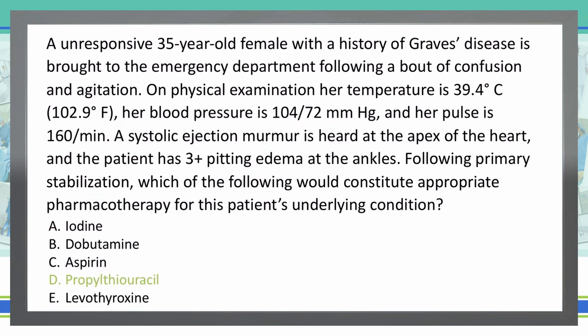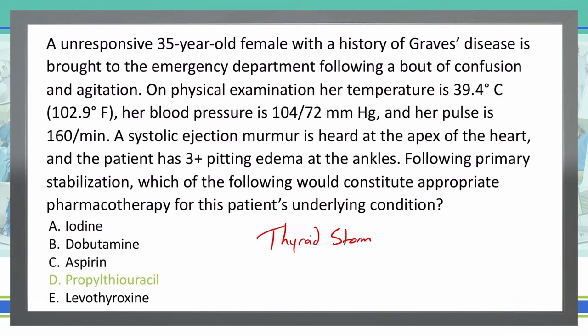D is the correct answer. What we're dealing with is a thyroid storm, which is an extreme form of thyrotoxicosis. The symptoms we see — high pulse rate, the murmur, pitting edema, high temperature — are all due to beta adrenergic outflow from that thyroid storm. We do our primary stabilization for the unresponsive patient, ensuring airway, breathing, and circulation are okay, and then we use either propylthiouracil PTU or methimazole. Either one of those would be correct.